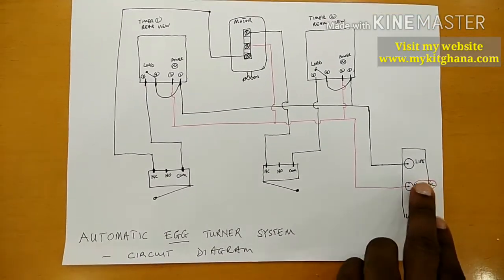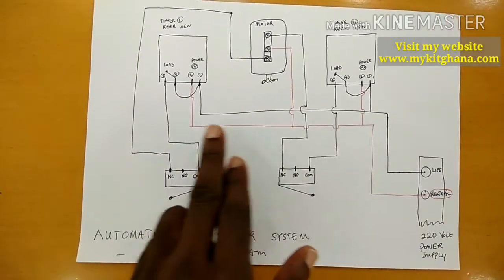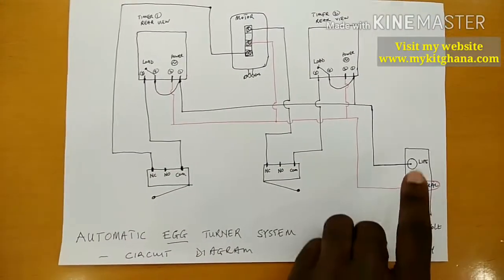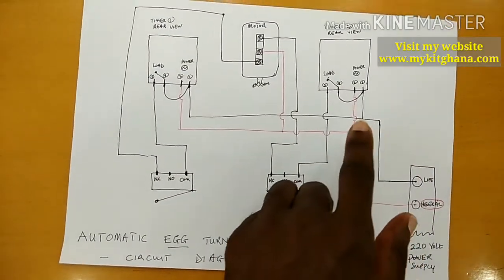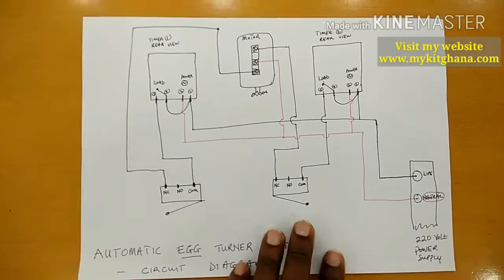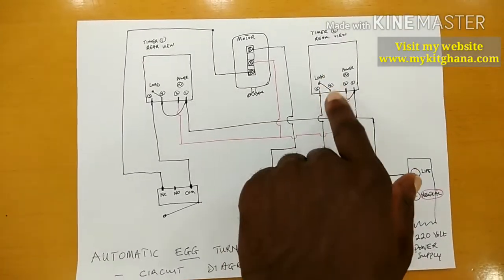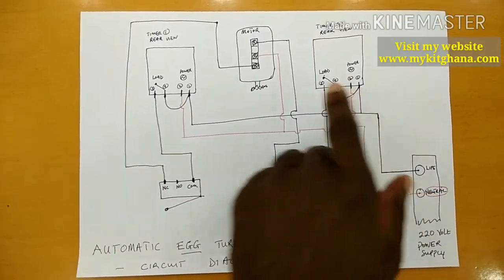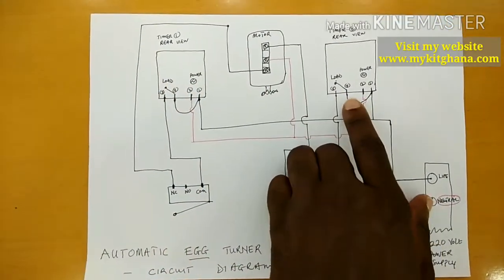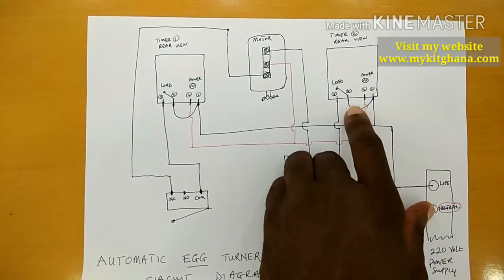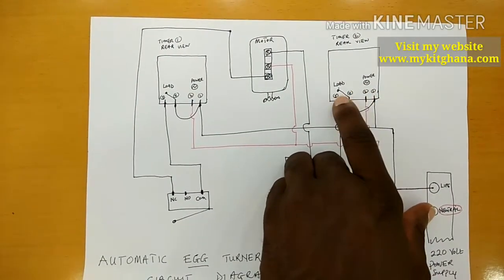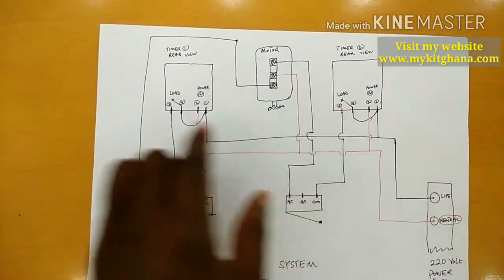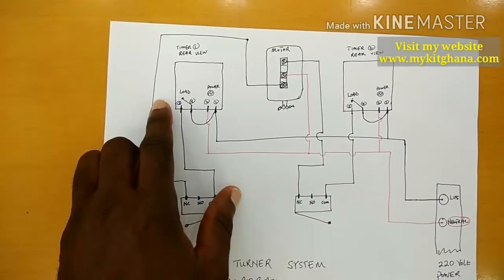All my red lines are neutral lines and the black lines are live lines. If you look behind the timer switch, the one in the video, this is how the rear view is. You have port 1, 2, 4, and then 5, same as this.